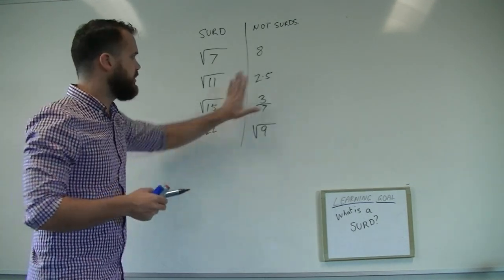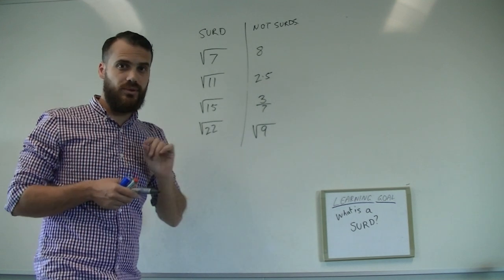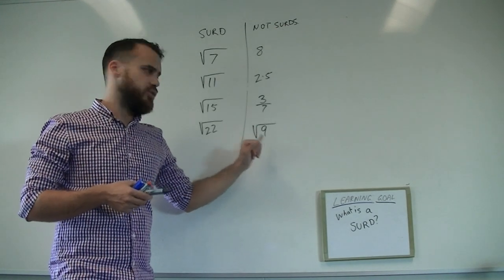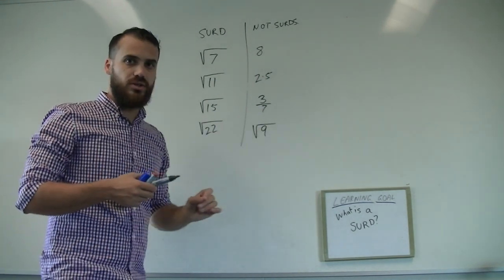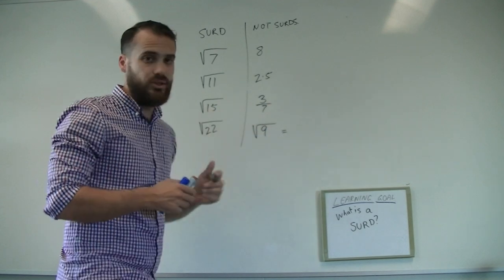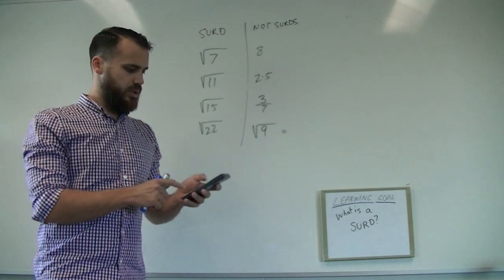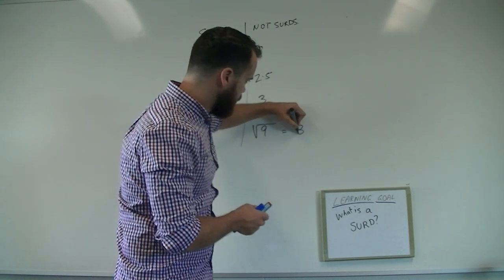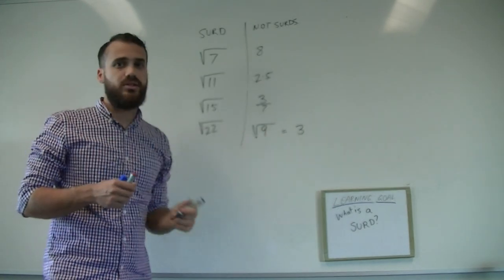So you should be getting a fair idea of what a SURD is. It's the square root of a number — that much is true. So this is a SURD, this is a SURD, this is a SURD, this is a SURD. That's why root 9 is not a SURD — because it can be simplified to the number 3.